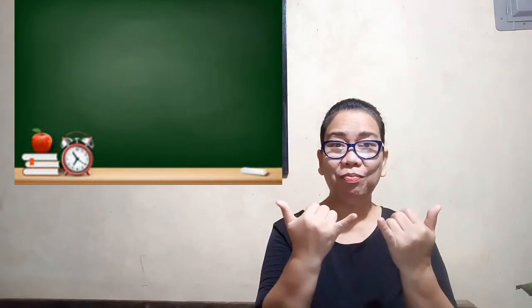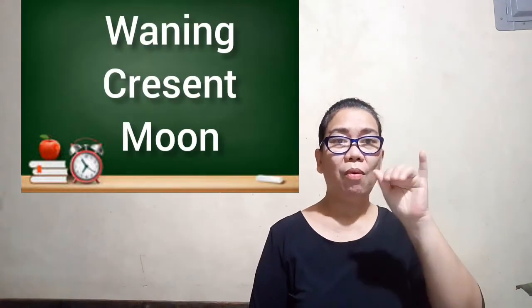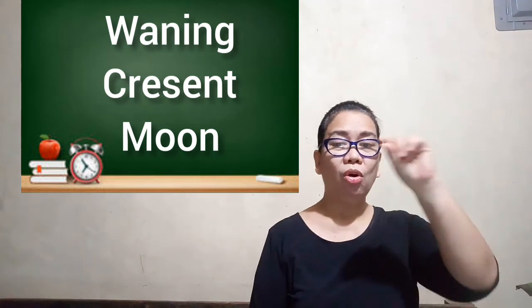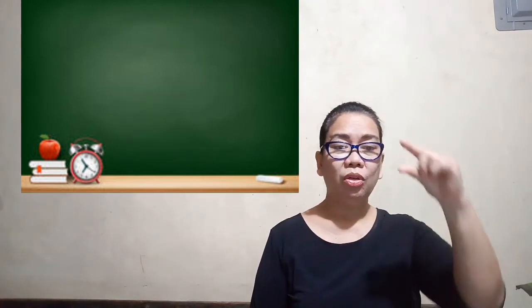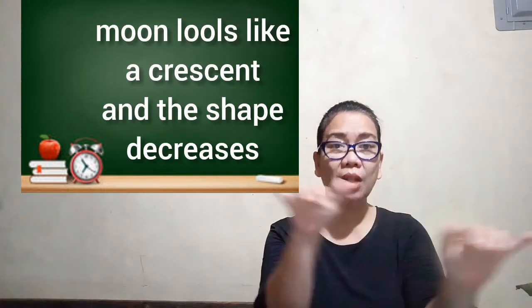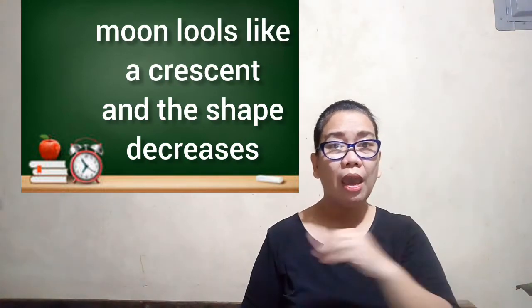The last phase, number eight, is the waning crescent moon. It happens when the moon looks like a crescent and the shape decreases in size from one day to the next.